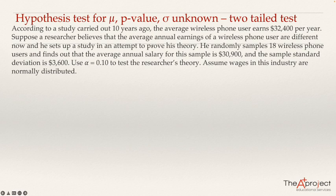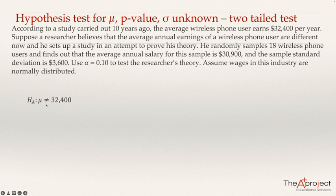We are going to check if the average earnings for wireless phone users is different now. The researcher believes this average is different than the previous value of $32,400. The hypothesis states that the mean is now different than $32,400. Because this hypothesis doesn't have an equal sign, it is the alternative hypothesis. The opposite — the one with the equal sign — will be the null hypothesis.